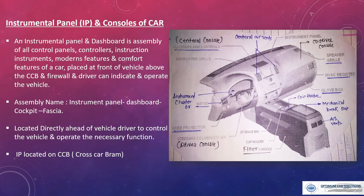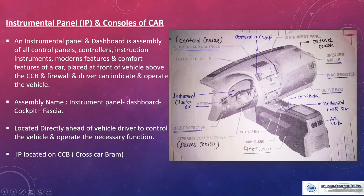The IP — instrument panel — is located on the CCB, that is the cross car beam. This is an example of an instrument panel and dashboard with the floor console of a right-hand drive vehicle. You can see the instrument panel with the meter cluster, air vents, air control vents, and below that there is an HVAC unit. This area is called the driver console, and exactly opposite is the co-driver console. The central area is the central console, which includes the cluster and controllers like a music system, different types of controls, headlights, and other controls. All the switches are at the central console. The floor console includes the coin holder, mechanical brake slot, and for the rear passengers there is also an air vent provision. At the co-driver side you can see the speaker bezel grid, HVAC register, and glove box.